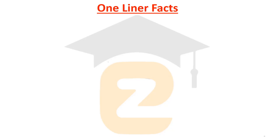This is the video. We are here discussing one-liner facts on writers and poets and also the history of English literature. This is a series where we discuss important facts. Today we are going to talk about one-liner facts related to one of the important dramatists and novelists of the 20th century, who was awarded the Nobel Prize for Literature in 1932.